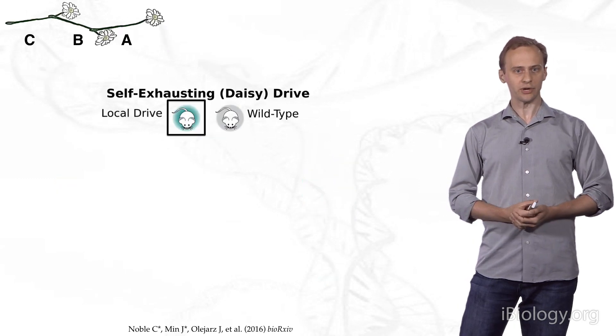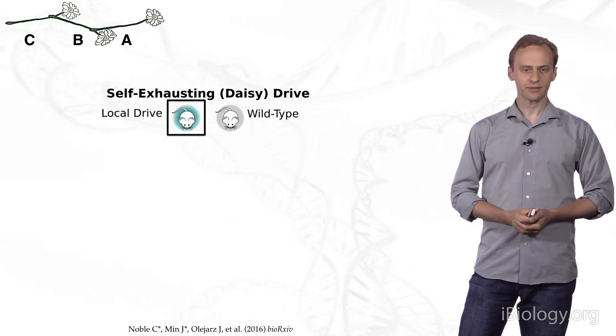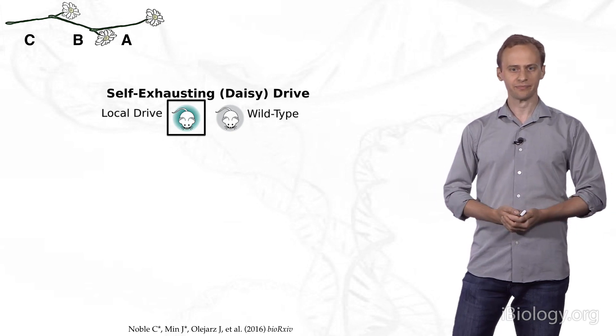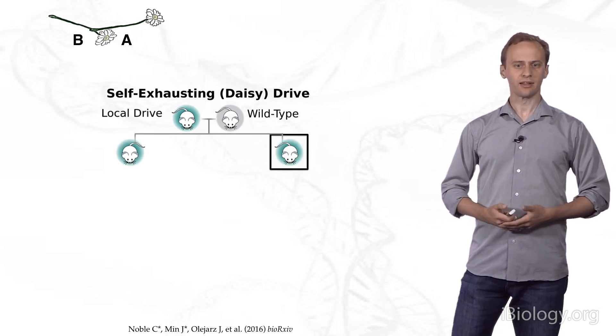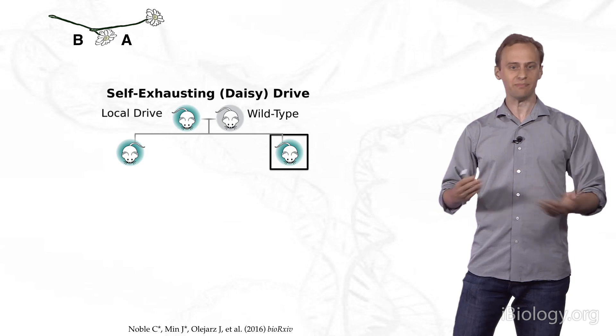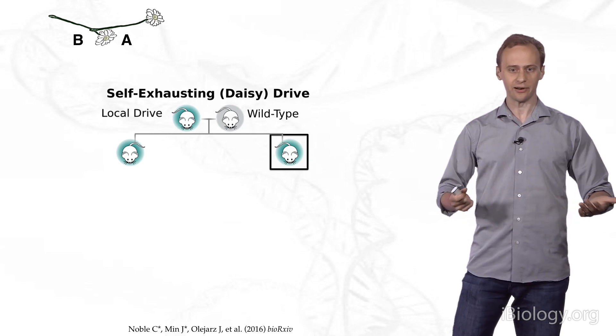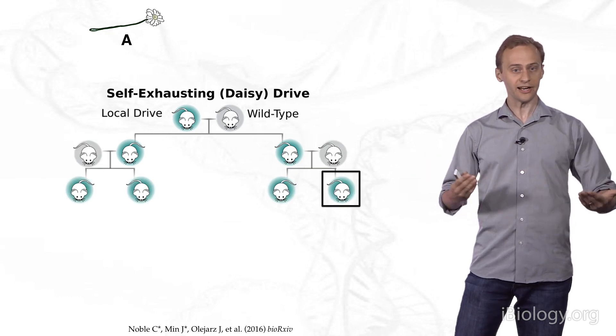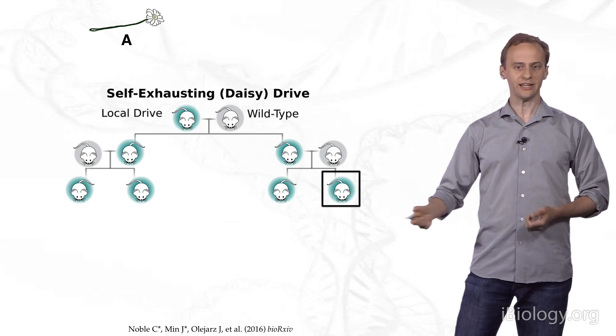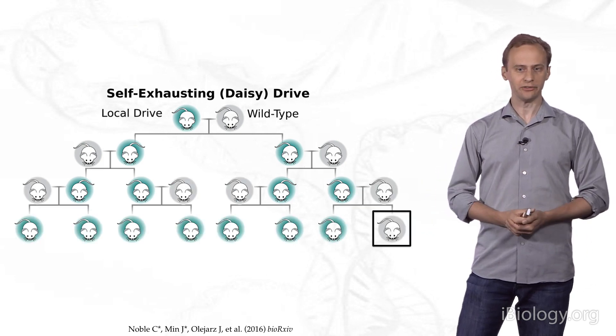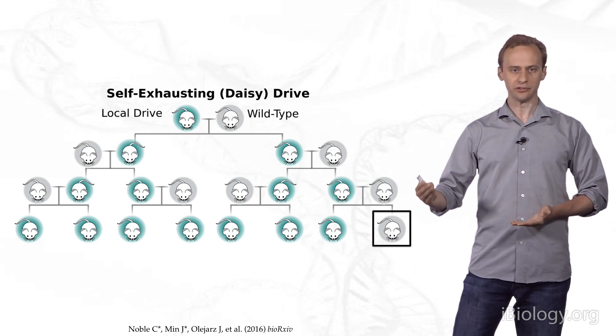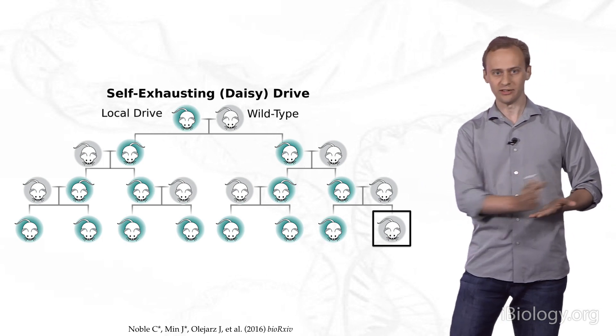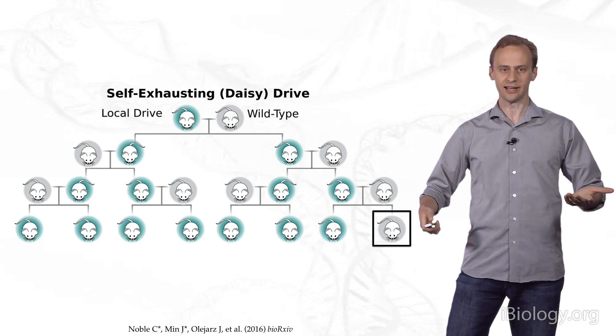That means that when we look at the family tree of something like a DAISY drive, if we assume that the drive carrier at the top is a heterozygote that has one copy each of C and B and A, then when that organism mates with the wild-type, all of the offspring will inherit B and A. But this one on the end here does not inherit C. In the next generation, that means you get an offspring that does not inherit B. So, this one only carries A, which means one more generation of mating-to-wild type. And you finally get a descendant of that original CBA organism that is entirely wild-type. Here's an example of how the drive system literally runs out of genetic fuel.